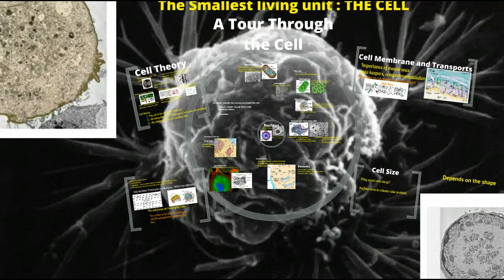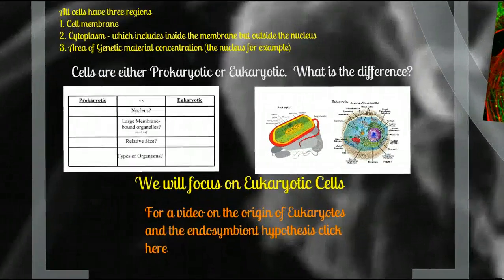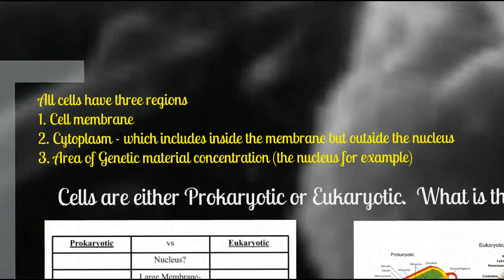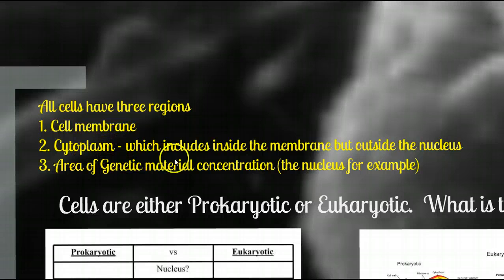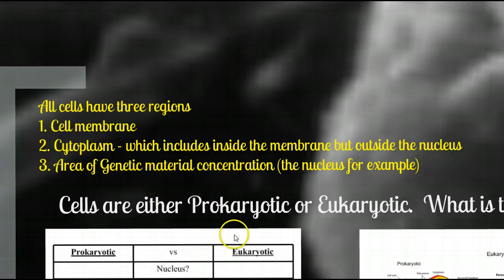Now we need to look at cells in a very general sense. All cells have three regions: a cell membrane, a cytoplasm which includes the inside of the membrane but outside the nucleus, and an area of genetic material concentration, like a nucleus, for example.